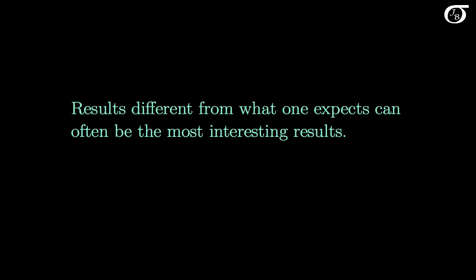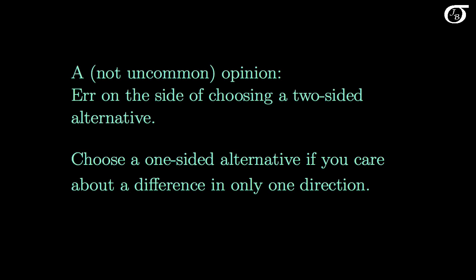And if we always chose the alternative hypothesis based on what we expected to get before running the experiment or getting our sample, then that's a problem as well. Results different from what one expects can often be the most interesting results. So here's my opinion on the matter, and it's one that's shared by many others: err on the side of choosing a two-sided alternative hypothesis, and choose a one-sided alternative if you care about a difference in only one direction.